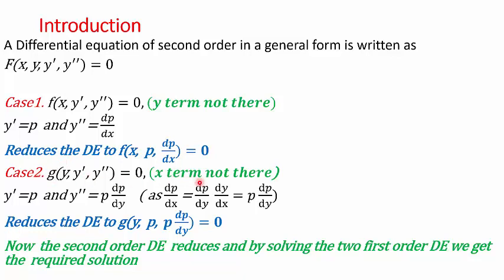The second case is when there are no x terms. Here, again, we take y' = p. When I differentiate y' with respect to x, we get y'' = dp/dx. Now dp/dx can be written as dp/dy · dy/dx. Since dy/dx is p, we get dp/dx = p·dp/dy. So we take the substitution y' = p and y'' = p·dp/dy.